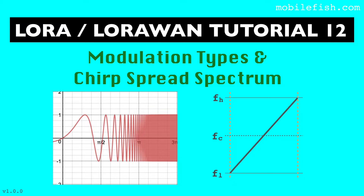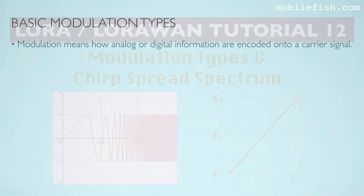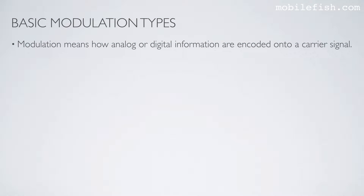In this tutorial I will explain what the basic modulation types are and what Chirp spread spectrum is. Modulation means how analog or digital information are encoded onto a carrier signal.